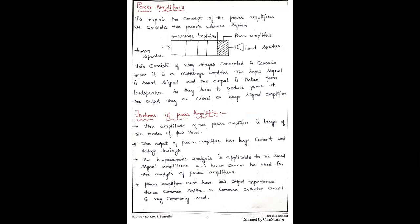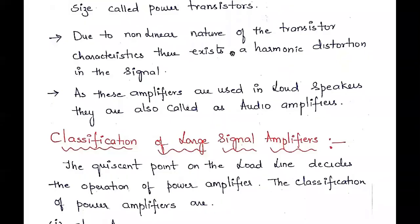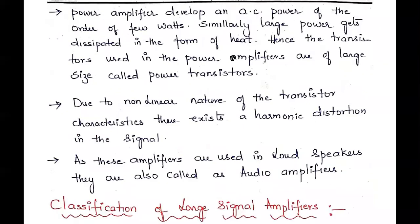We have discussed the public addressing system where the last stage is a power amplifier. Features of power amplifier were also discussed in the previous class. Another important feature of the power amplifier is that we are obviously having large power at the output. This power is dissipated in the form of heat.